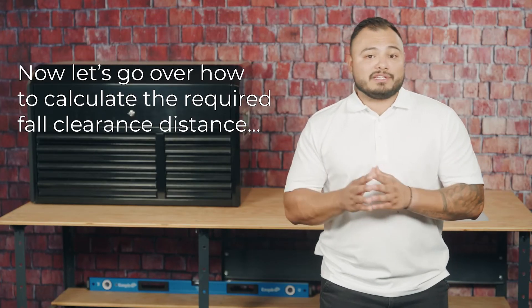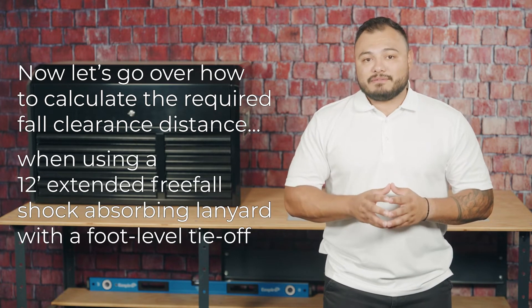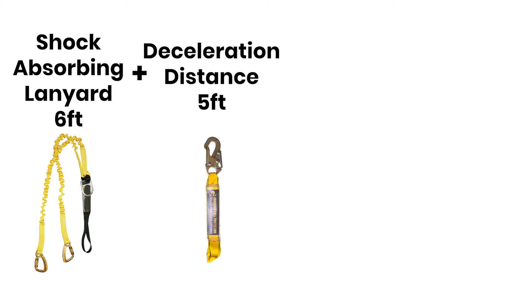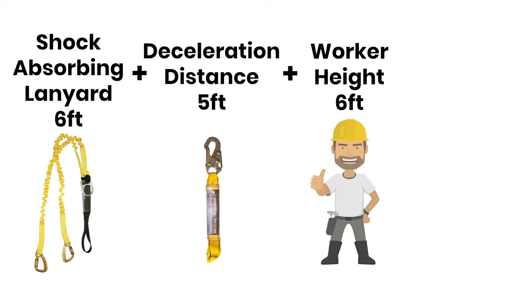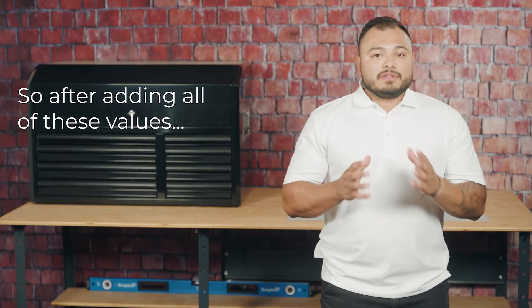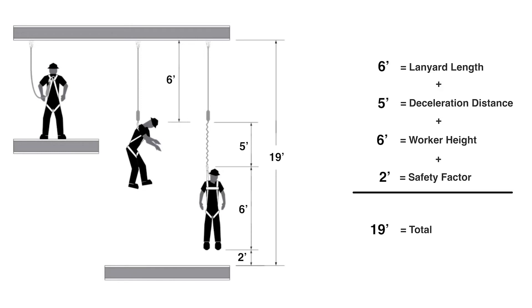Now let's calculate the required fall clearance distance when using a 12-foot extended free fall shock-absorbing lanyard with a foot level tie-off. In this scenario, we'll take into account the length of the shock-absorbing lanyard, which will be six feet for this type of lanyard. The deceleration distance will be five feet. Then take into account the height of the worker — let's use a six-foot tall worker in this scenario as well. Finally, we'll add a safety factor of at least two feet to account for any other variables such as an improperly adjusted harness, worker weight, etc. After adding all these values, the next lower level or the floor must be at least 19 feet from the location of the anchor point.